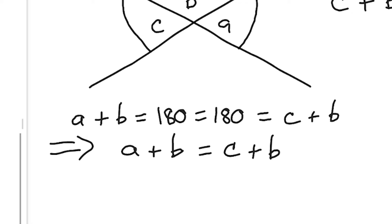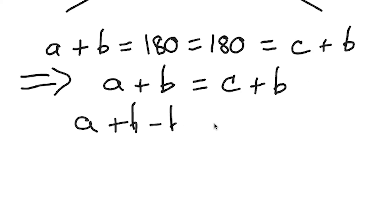So, algebraically, we would write that as subtracting B from both sides. A plus B minus B, and then C plus B minus B. Do the same thing to both sides. And that leaves us with A equals C, which is what we see here visually.